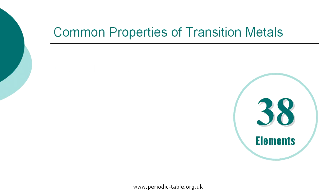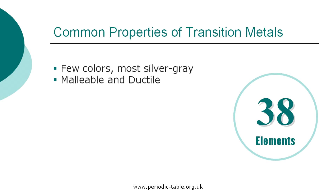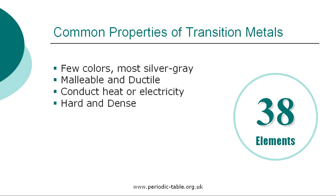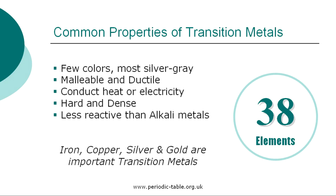Only a few of the transition metals are colored. Most of them are silver gray or silver bluish. As with all metals, the transition metals are ductile and malleable, and good conductors of electricity and heat. They are generally hard and dense, and less reactive than the alkali metals. Iron, copper, silver, and gold are important transition metals.